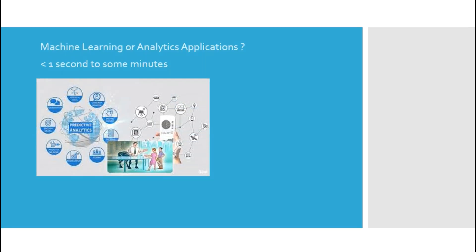Machine learning and analytics applications can expect data within one second or up to a few minutes, depending on the use case. Mostly analytics applications do not need real-time data — batch data is enough for them to analyze and take business decisions that don't need to be made immediately. However, some machine learning applications require near real-time data to train the model as quickly as possible and deploy it in production.